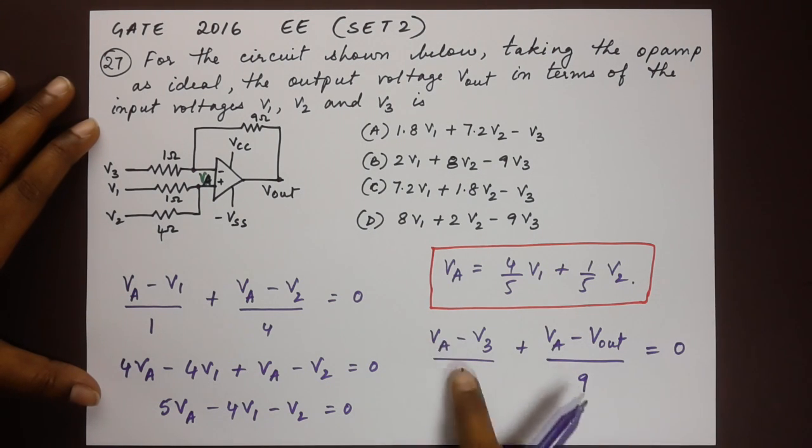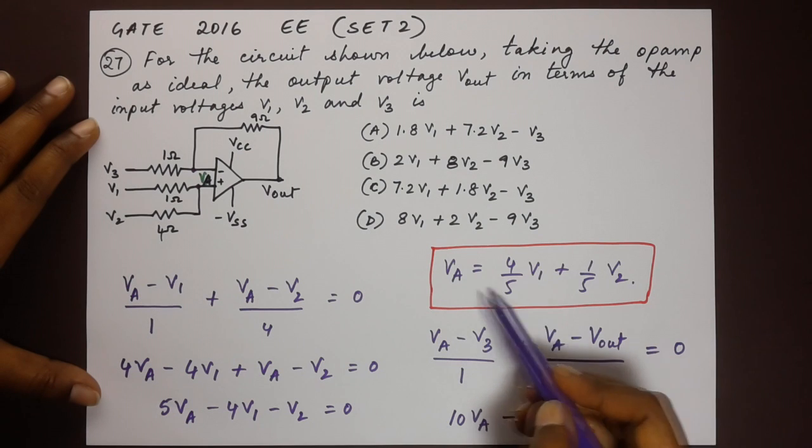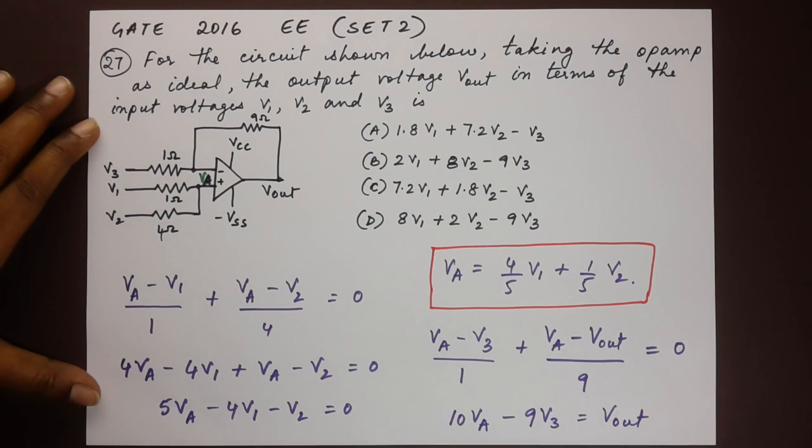If we are to cross multiply and simplify this, we will arrive at the equation 10Va minus 9V3 is equal to Vout. In this equation, let's substitute Va here. When we do that, we will be writing Va in terms of V1 and V2 and we will have the equation for Vout in all of these three different voltages.